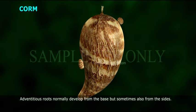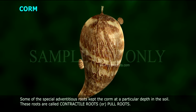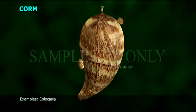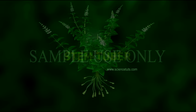Adventitious roots normally develop from the base, but sometimes also from the sides. Some special adventitious roots keep the corm at a particular depth in the soil. These roots are called contractile roots or pull roots. Examples: Colocasia, Amorphophallus.